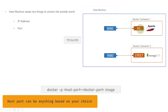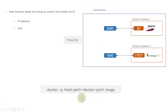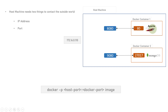The -p flag is used like this: docker run -p host_port:docker_port image_name. The image name is the image from which you want to create a container. You are connecting the host port — the port on the host machine — to the docker port, which is the port inside the running container. So 8080 will be connected to 80: you write 8080 for the host port and 80 for the docker port. For MongoDB, you use 9080 as the host port and 27017 as the docker port.